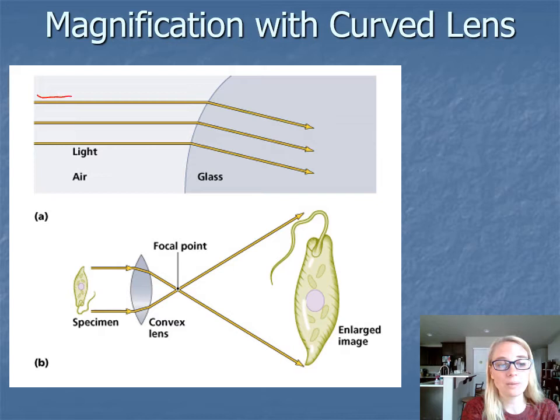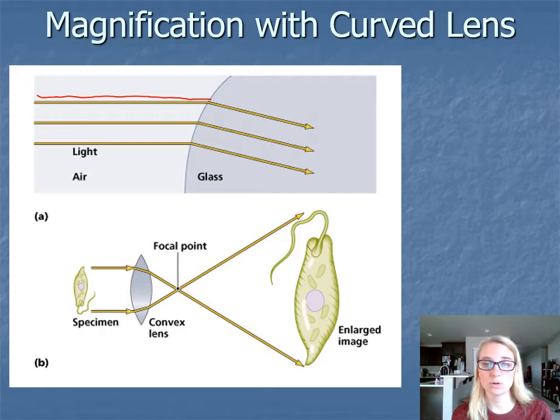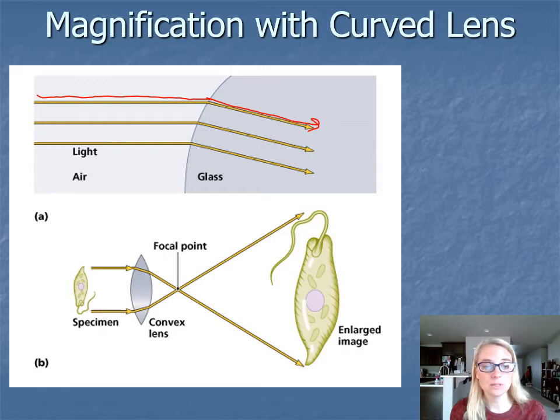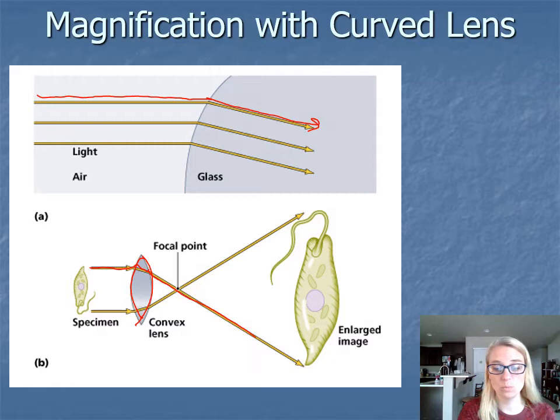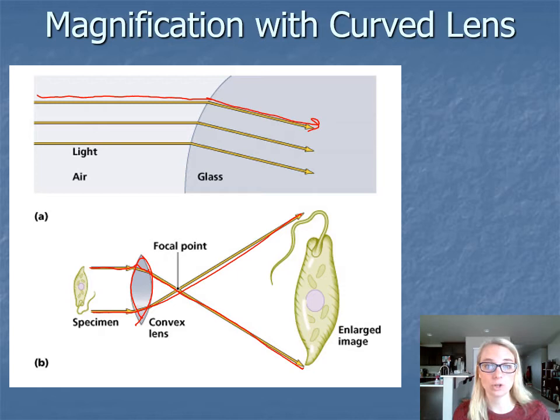When light hits glass, which has a different density, it will curve and be sent in a new direction. By taking advantage of light refracting when it hits different substances, you can curve lenses — especially if you curve them on both sides into a biconvex shape. Light comes in, refracts, exits, and refracts again. With two points of refraction, the image looks larger than it actually is. This is the basis behind magnification with curved lenses.